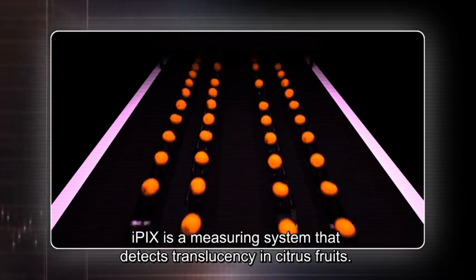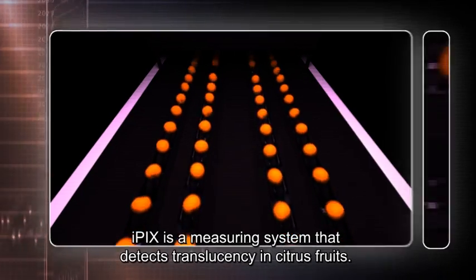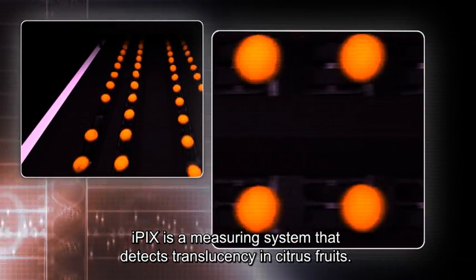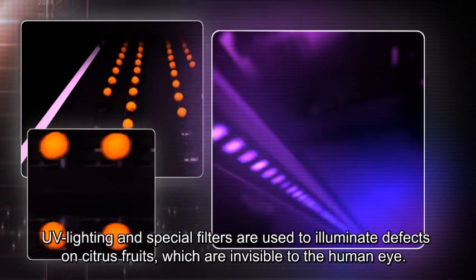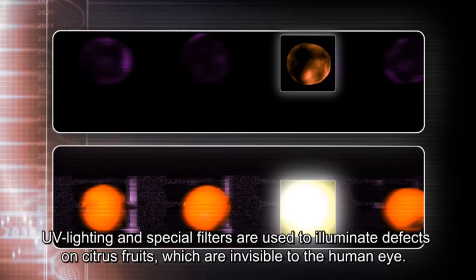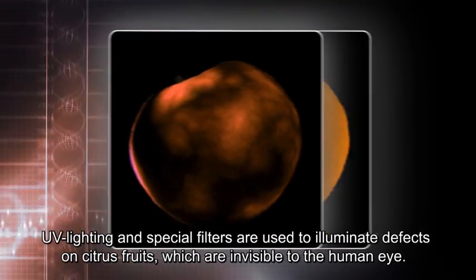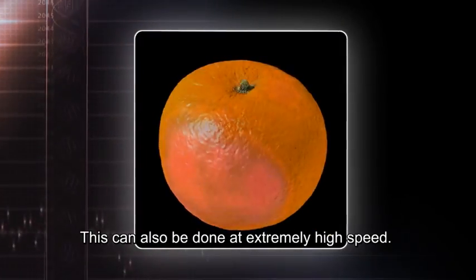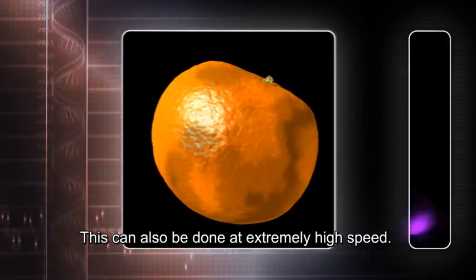EyePix is a measuring system that detects translucency in citrus fruits. UV lighting and special filters are used to illuminate defects on citrus fruits which are invisible to the human eye. This can also be done at extremely high speed.